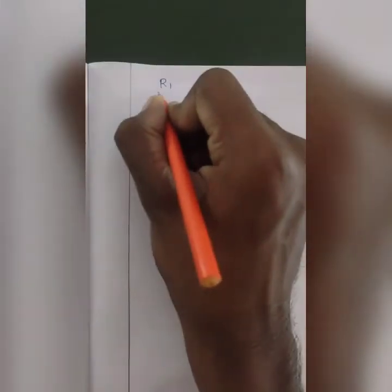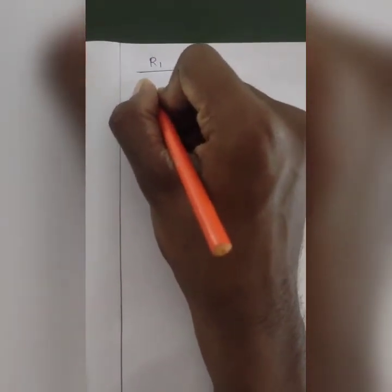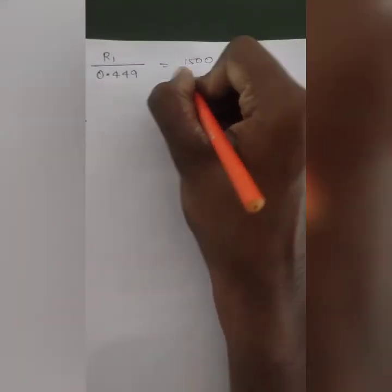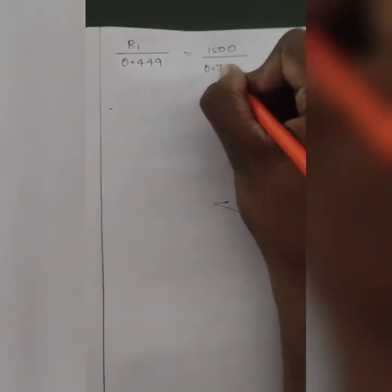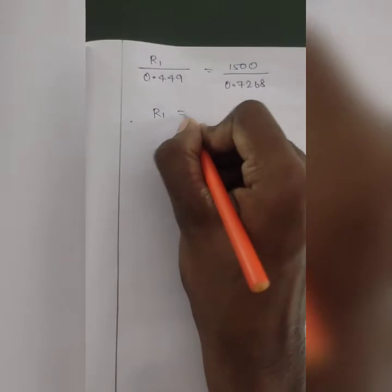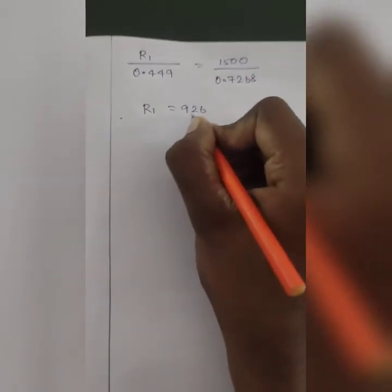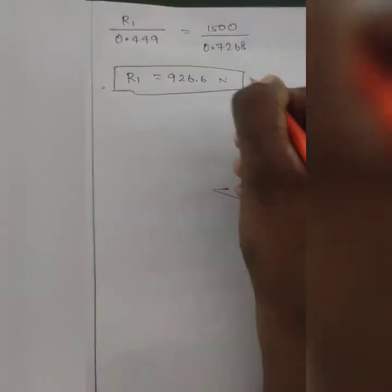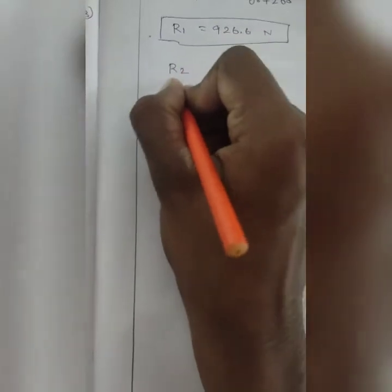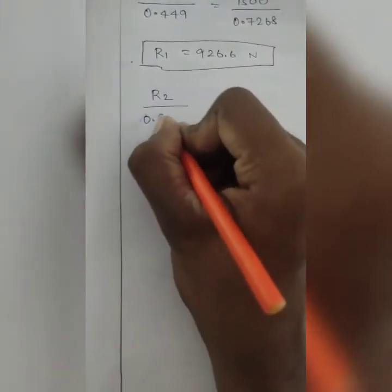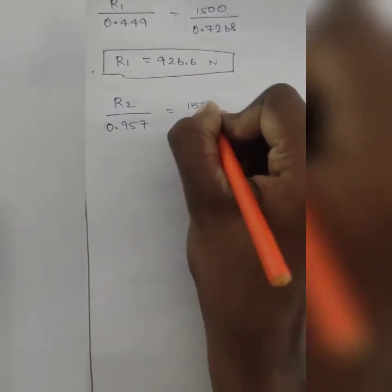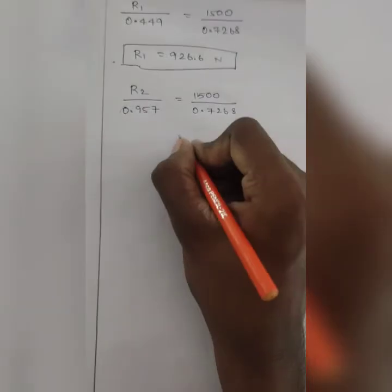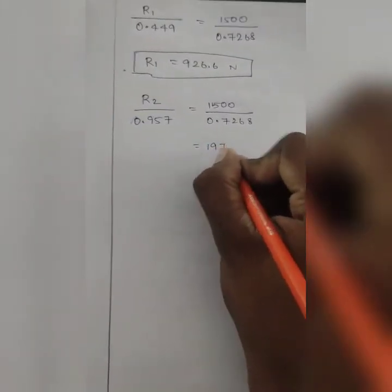R1 by sin of 153.3 is 0.449, which is equal to 1500 by 0.7268. R1 value is 926.6 N. R2 divided by 0.957 equals 1500 by 0.7268, so R2 is 1975 N.